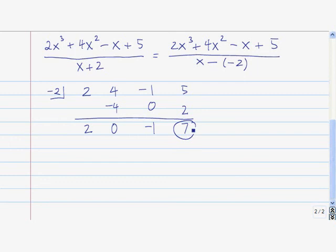Okay, so the 7 is the remainder. That's the constant term. That's the coefficient of x. That's the coefficient of x squared. So our answer is 2x squared plus 0x, so we're going to leave that out, minus 1 plus the remainder 7 divided by x minus negative 2, which is really x plus 2. Okay, so that's our answer.